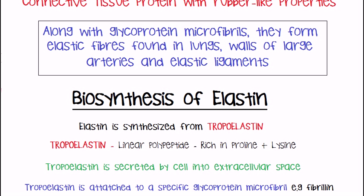In the last video we talked about collagen, which is rich in hydroxyproline and hydroxylysine and has small amounts of proline and lysine because they are hydroxylated during synthesis. Elastin, by contrast, is rich in proline and lysine and has little hydroxyproline and hydroxylysine.